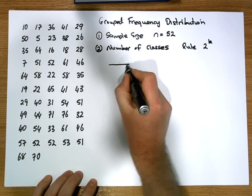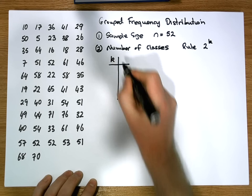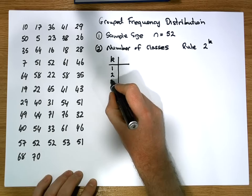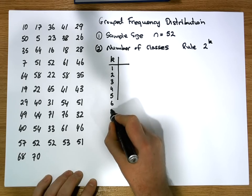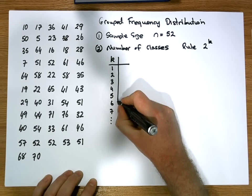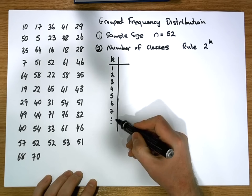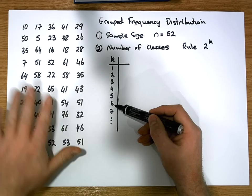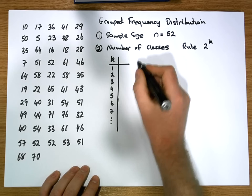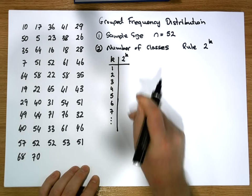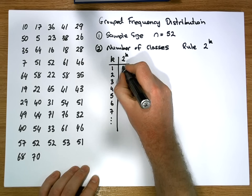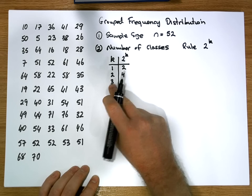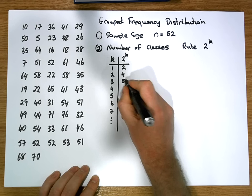To figure this out, we construct a small table. In the first column we list down values for k — so we could have a distribution with one class, two, three, four, five, six, seven classes, and so on. In the second column we calculate two to the power of k: when k=1 we get 2, when k=2 we get 4, when k=3 we get 8, and the pattern continues with 16, 32, 64, 128, and so on.